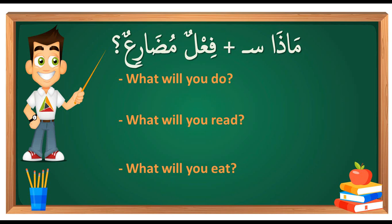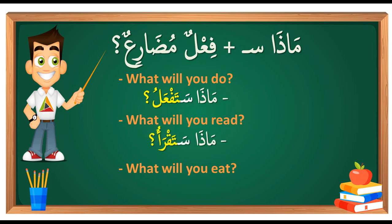For example, 'what will you do?' — first put 'mada,' then add the verb with 'sa.' Another example: 'what will you eat?' We say 'mada satakulu.' So it's always 'mada' plus 'sa' plus the present tense verb — that's the formula.